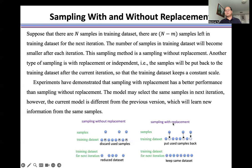In sampling with replacement, after we sample from the training dataset, we put them back to the training dataset. So for the next iteration, the training dataset will have the same number of samples.